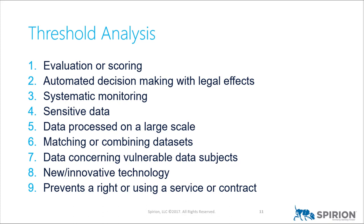Criterion seven: data concerning vulnerable data subjects. 'Vulnerable' can mean children — you're processing personal data of children — or, most likely, employees, because employees in the EU are considered to have unequal bargaining positions. Any data concerning vulnerable data subjects or employees is going to likely throw you into the high-risk category. Your HR system is a great candidate here. Almost everyone on this call is going to have some kind of HRIS system — this is a good example of where this will apply.